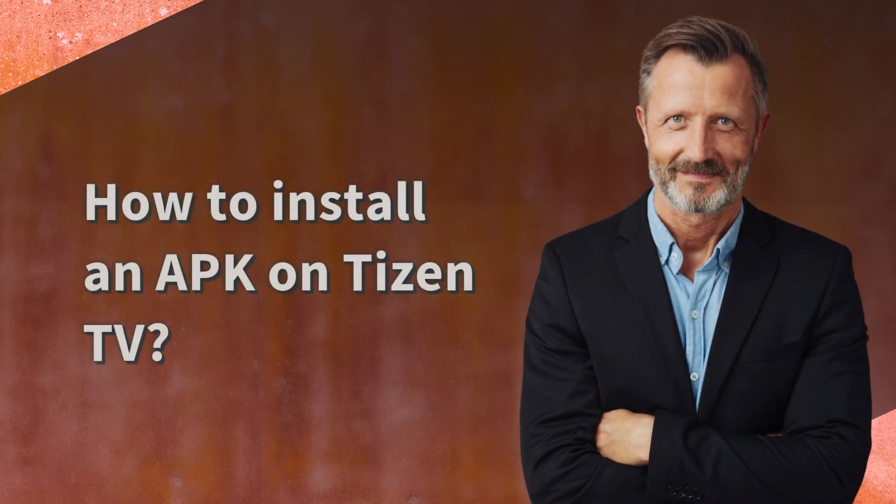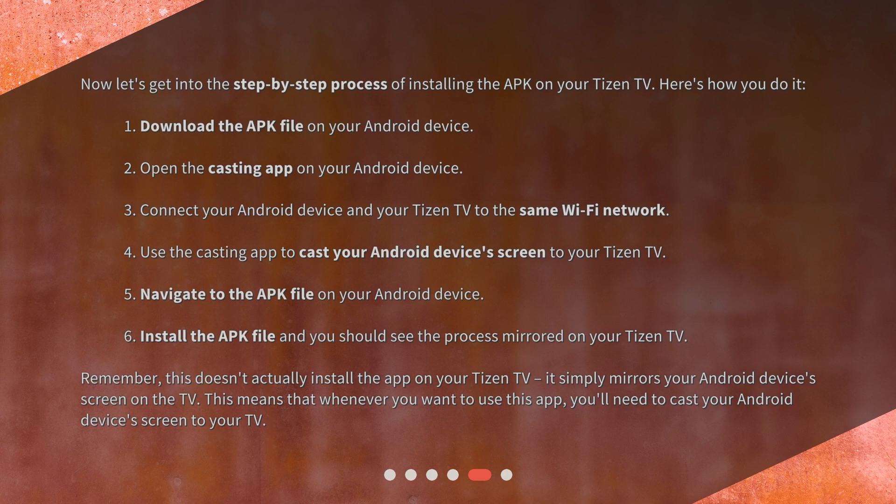Now let's get into the step-by-step process of installing the APK on your Tizen TV. Here's how you do it: 1. Download the APK file on your Android device. 2. Open the casting app on your Android device. 3. Connect your Android device and your Tizen TV to the same Wi-Fi network.